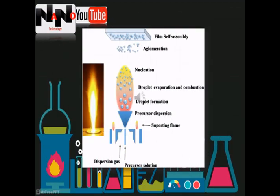In flame spray pyrolysis, an aqueous metal salt solution is sprayed as a fine mist through a capillary and into a flame. Small droplets are formed as the solvent burns inside the flame. The conversion of salt into metal oxide occurs upon the pyrolysis reaction, and the metal oxide atoms aggregate into nanoparticles, which are then collected.